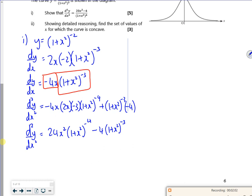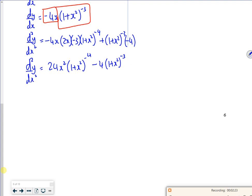So if you imagine, the first term is 24x² all divided by 1 plus x² to the power of 4. The second term is minus 4 over 1 plus x² all cubed. If I make the common denominator, all over 1 plus x² to the power of 4, minus 4 over 1 plus x² to the power of 3.